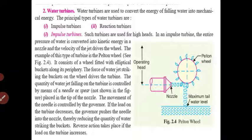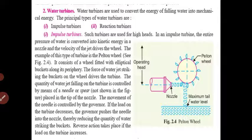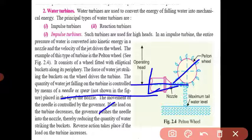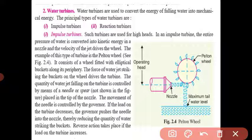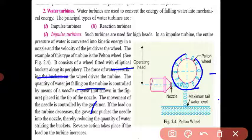Next, the Pelton wheel turbine is an impulse turbine. It consists of a wheel fitted with elliptical buckets along its periphery. The force of water striking the buckets drives the wheel and turbine. The quantity of water falling on the turbine is controlled by means of a needle, which controls the flow of water.